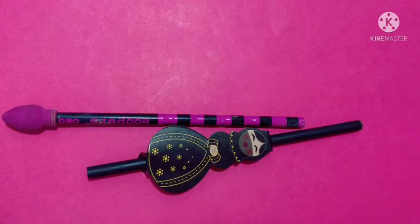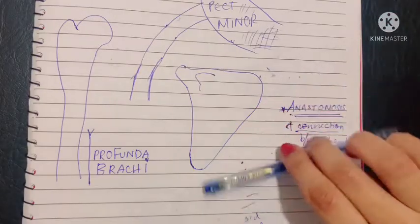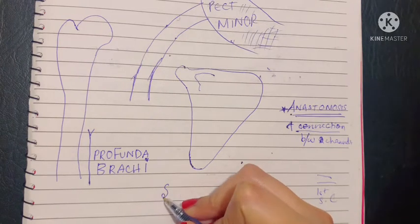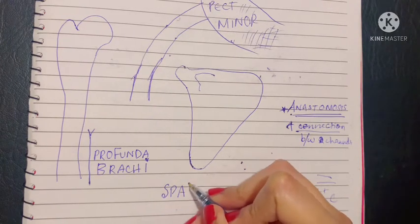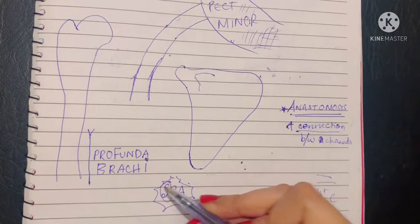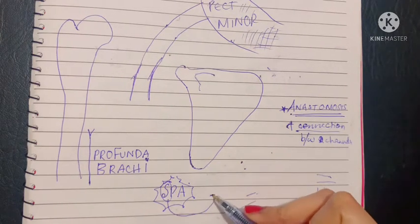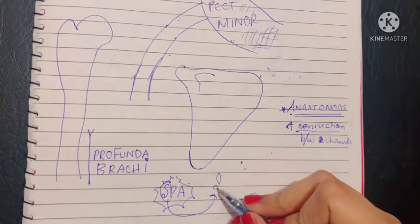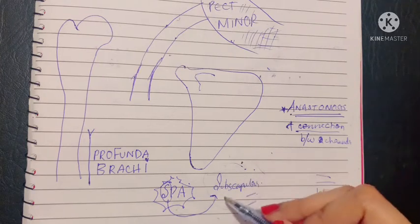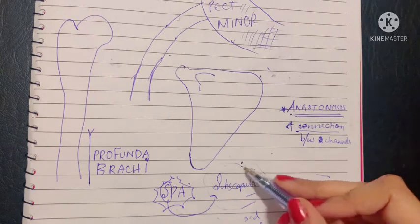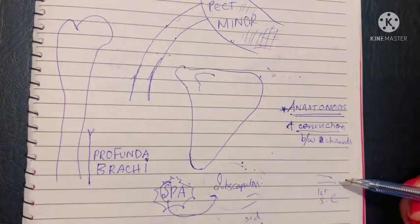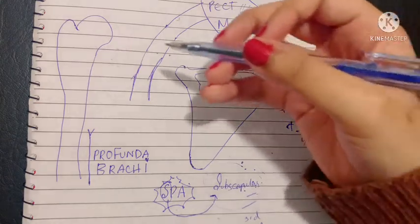Let's get back to the third part of the axillary artery. The three branches of the third part of the axillary artery are abbreviated as SPA. Remember this, and also remember that the S is the largest branch of the entire axillary artery, known as the subscapular artery. This is the part responsible for linking up the third part to the first part of the subclavian artery.